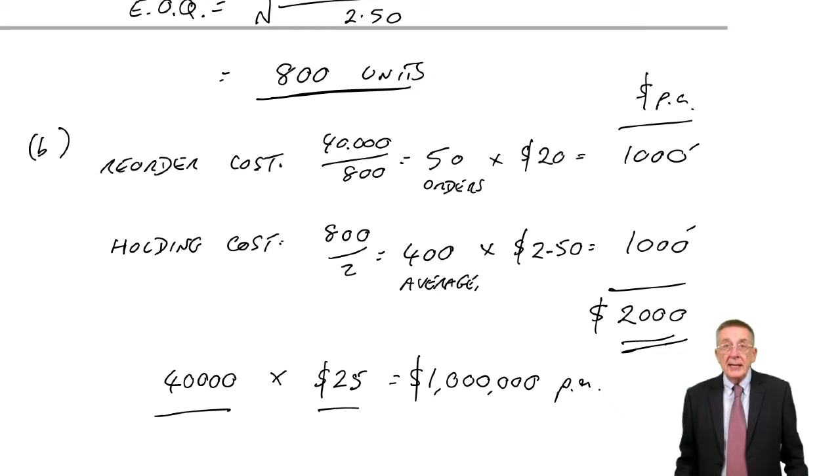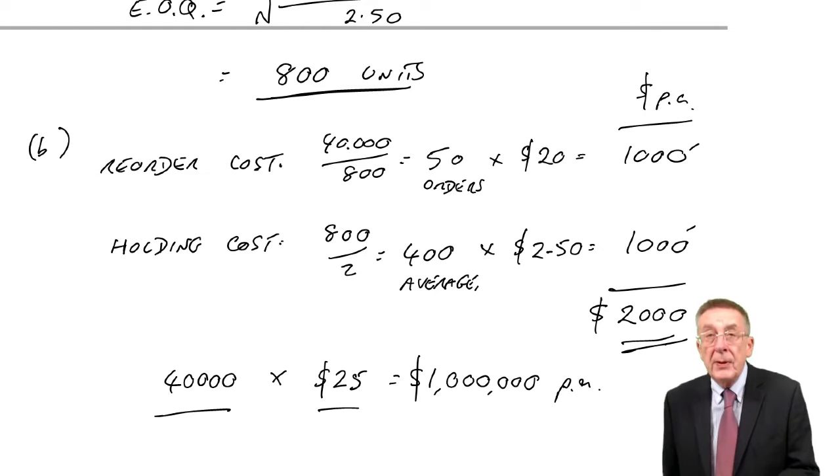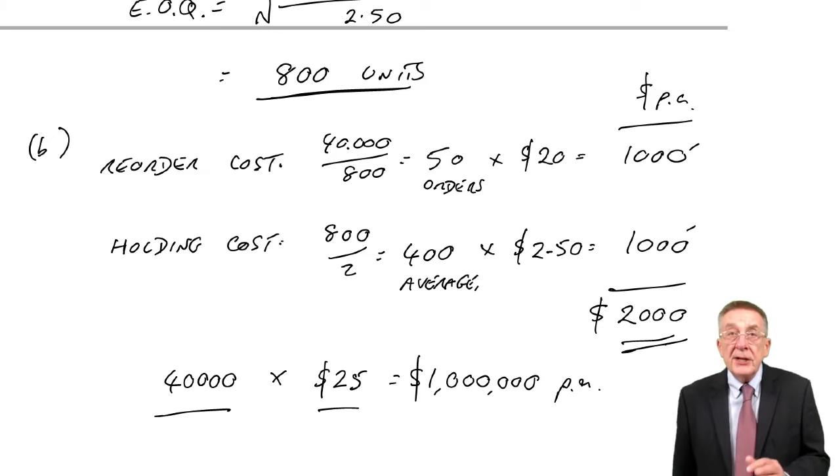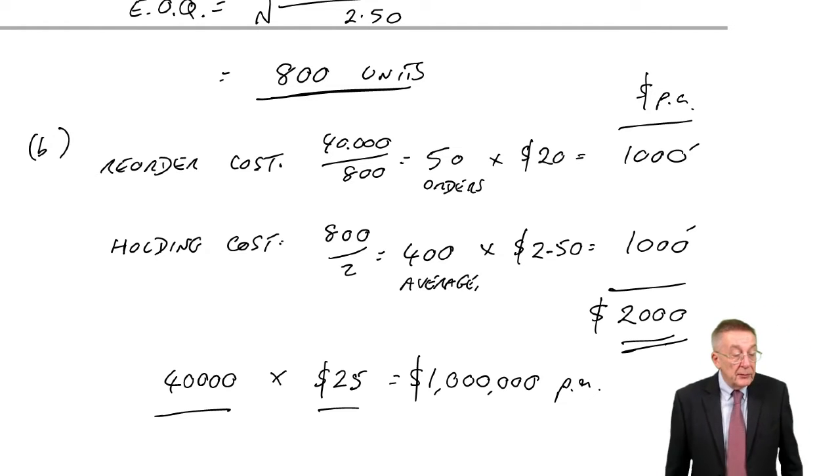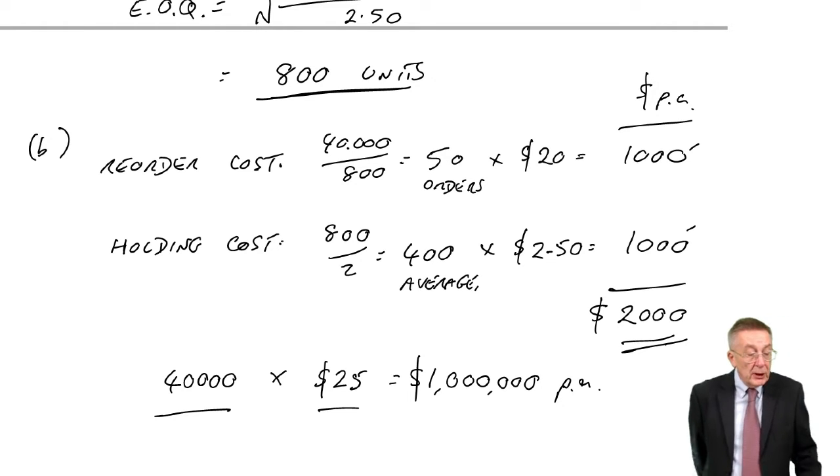However, there is one case where we'd have to look at the purchase cost, and it's when you get quantity discounts. So if you turn over and look at paragraph 6, or straight to example 3.